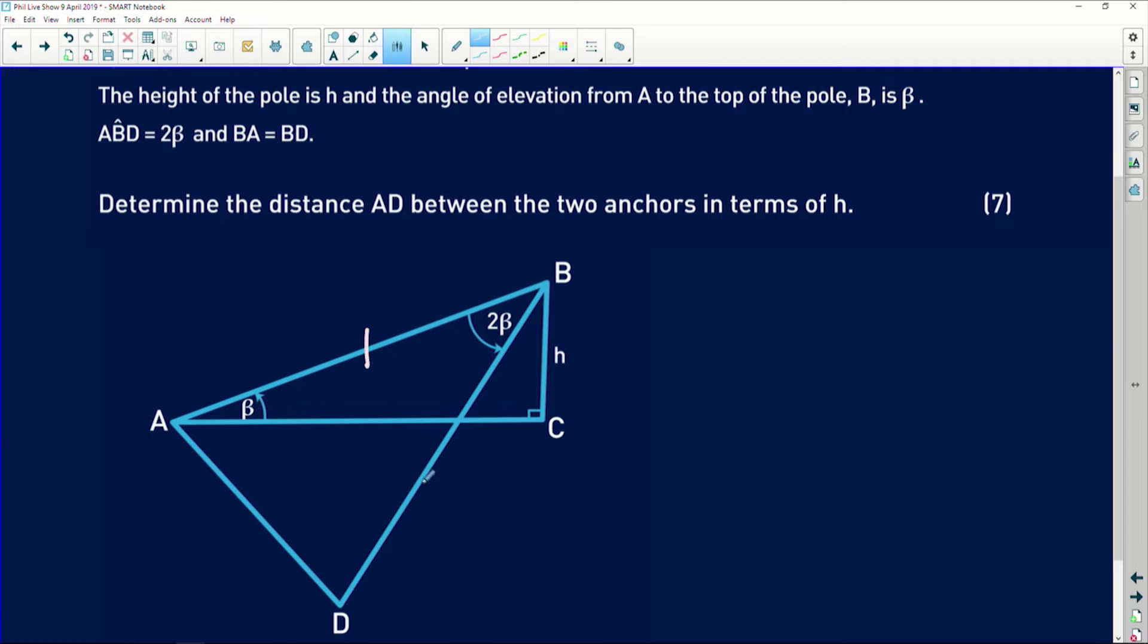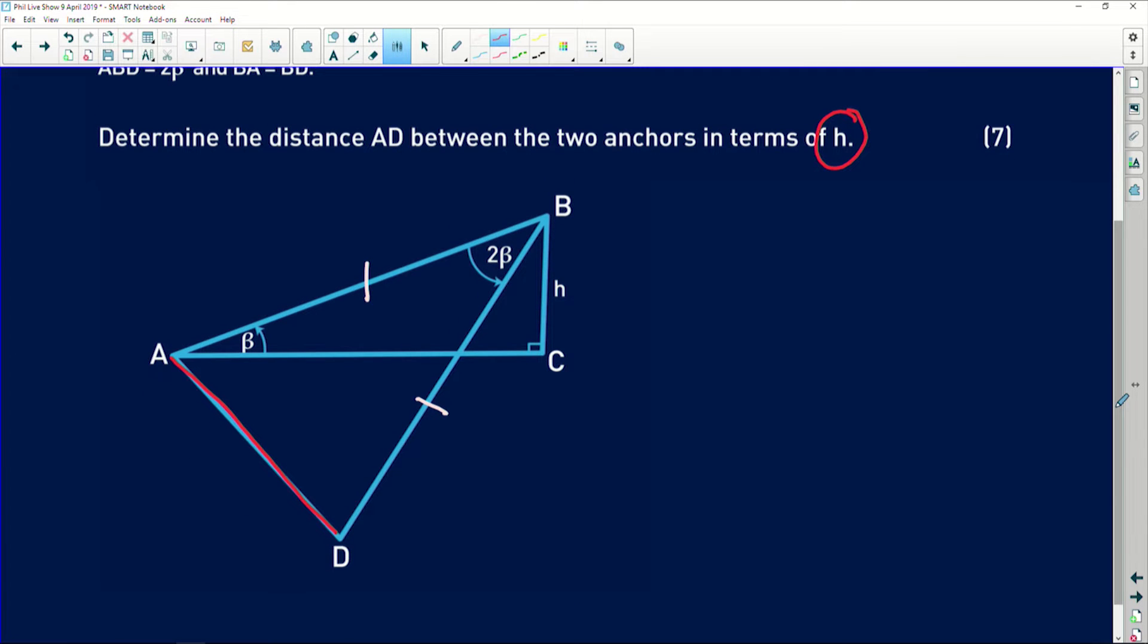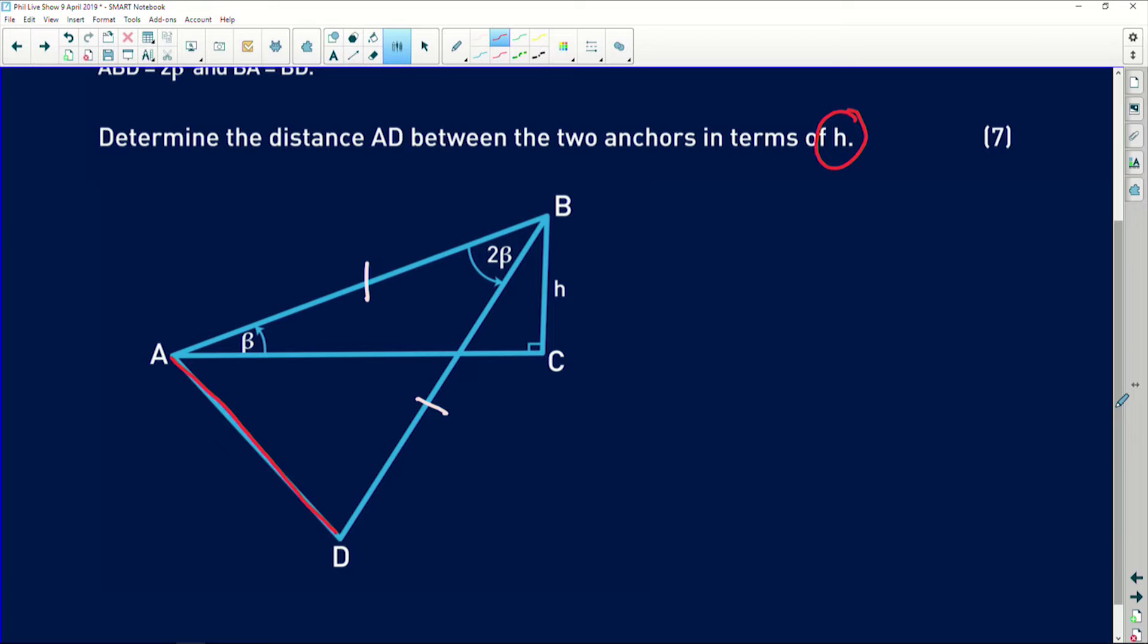Okay, so it's determine the distance AD between the anchors in terms of h. So in terms of h we're looking specifically and we're trying to find this length. Okay, so guys, when we're given a question like this that involves two different triangles, basically we're trying to test whether or not you can see that the length we're trying to find is in one triangle, but there's not enough information in that triangle to find that length. So you need to work from one triangle, find a common ground, and move to the next triangle. So let's see if we can do that.